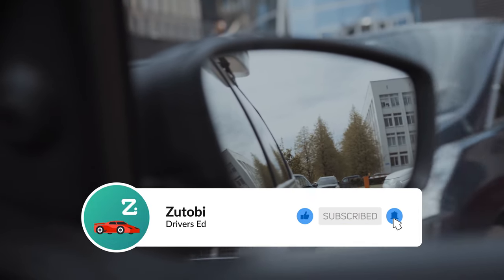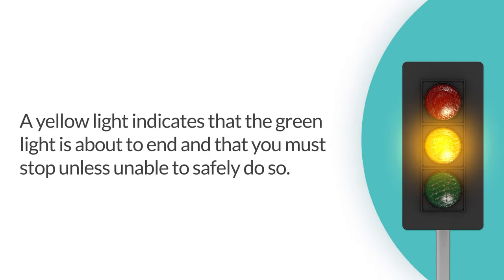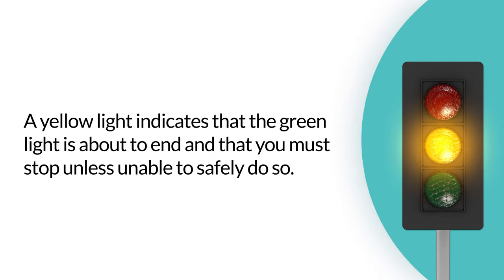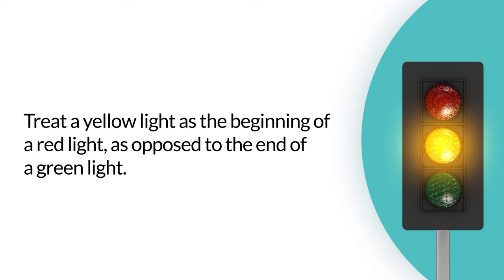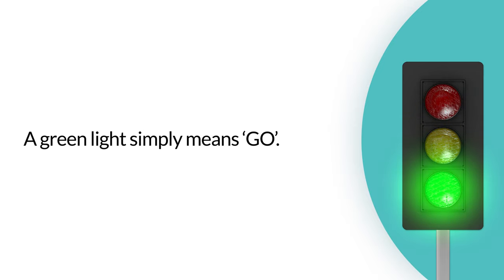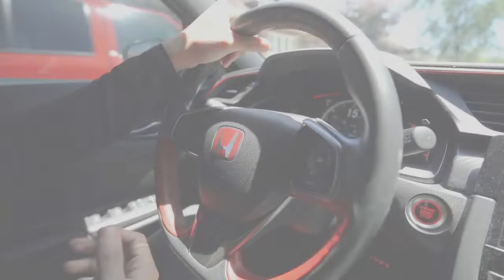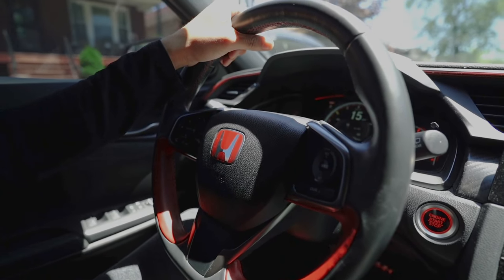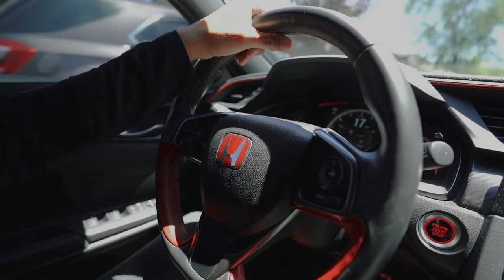You should always remember to look out for signs prohibiting turns, such as a no-turn-on-red sign. A yellow light indicates that the green light is about to end and that you must stop unless unable to safely do so. Treat a yellow light as the beginning of a red light, as opposed to the end of a green light. A green light simply means go — don't forget to yield to vehicles, cyclists, and pedestrians still in the intersection.